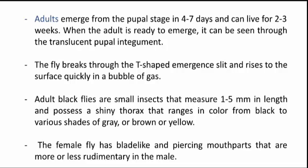Adults emerge from the pupal stage in 4 to 7 days and can live for 2 to 3 weeks. When the adult is ready to emerge, it can be seen through the translucent pupal integument. The fly breaks through a T-shaped slit and rises to the surface quickly in a bubble of gas. Adult black flies are small insects that measure 1 to 5 mm in length and possess a shiny thorax that ranges in color from black to shades of grey, brown, or yellow.